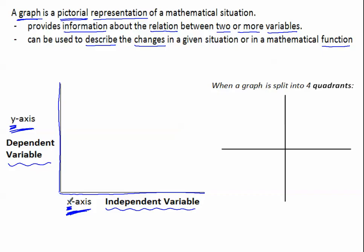Independent x, dependent is y. When a graph is split into four quadrants, the positive quadrant is quadrant one, and then moving to the left, quadrant two. So we move this way around the circle, and then quadrant three, and then quadrant four.